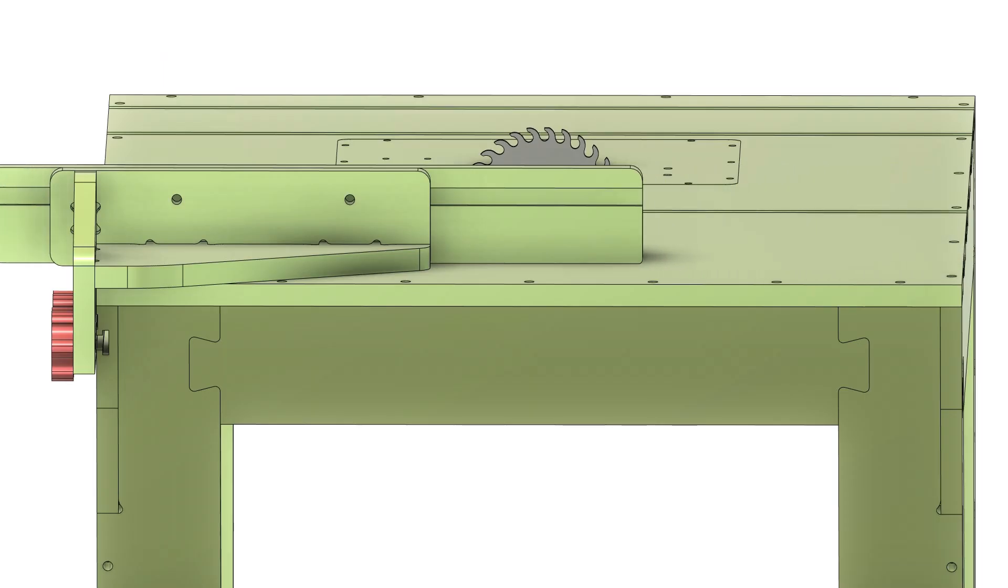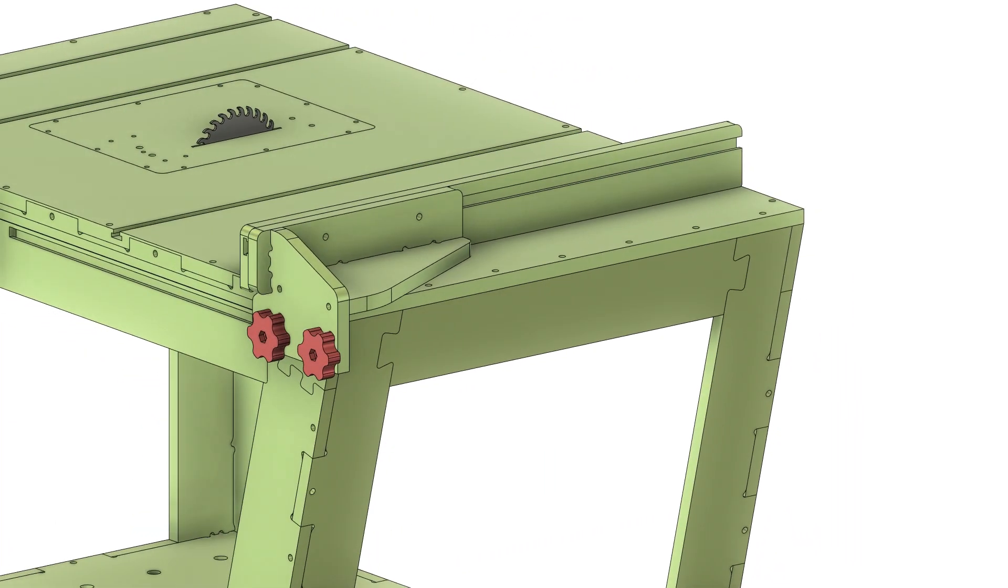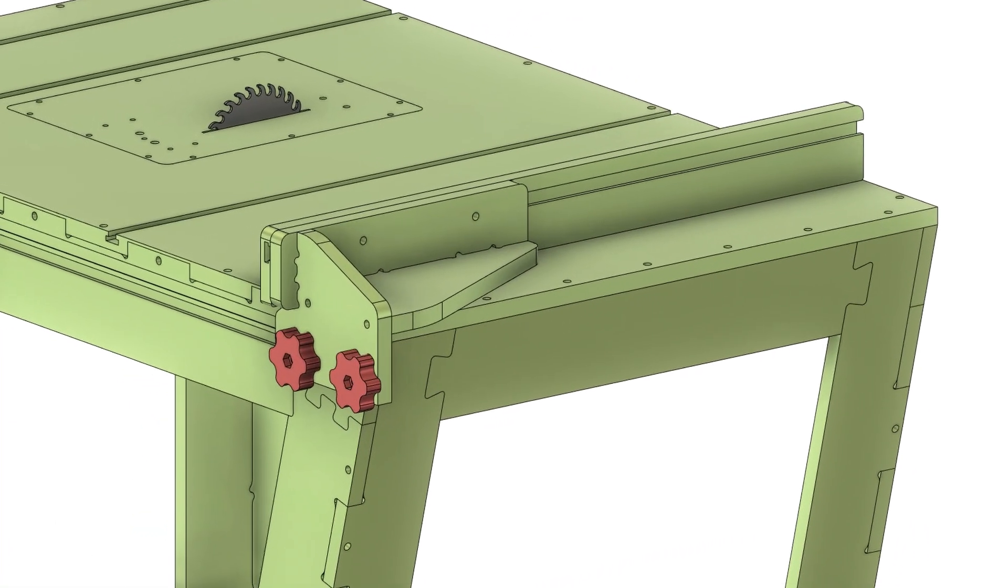The next task was to design the rip fence. I wanted to make it similar to one used in panel saws, so we can slide the fence in different positions relative to the saw blade. This way we can adjust the fence so it's more suitable for cutting panels like plywood and MDF, or slide it back so it's better for cutting hardwood strips.